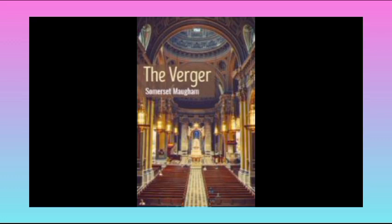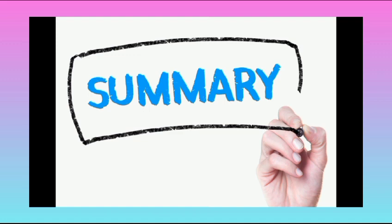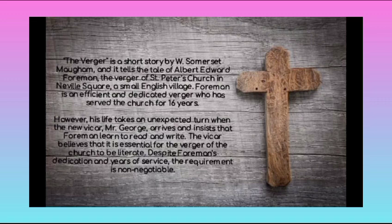Now we get into the summary of The Verger. The short story was written by Somet Moham. It tells the tale of Albert Edward Foreman, the verger of St. Peter's Church in Neville Square, a small English village. Foreman is an efficient and dedicated verger who has served the church for 16 years.